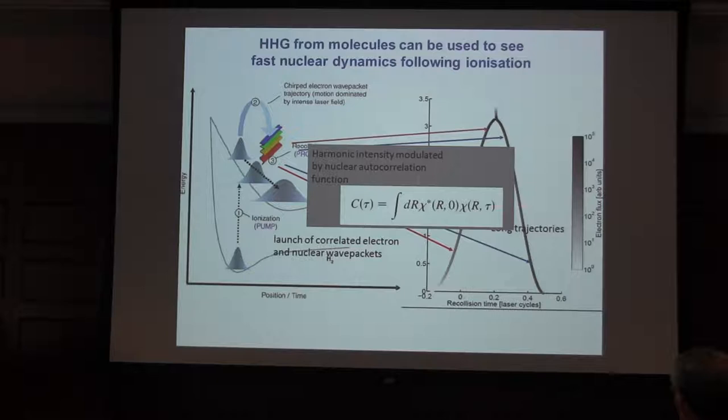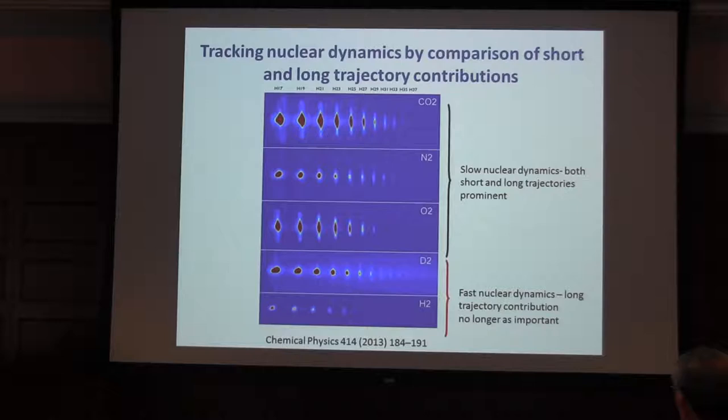Looking at these molecular HHG spectra where essentially the dominant effect is the nuclear correlation function changing in time. In other words, nuclei are moving in the time between ionization and recombination that reduces the harmonic signal according to the reduced overlap. One could potentially follow that by looking at short and long trajectories. In fact, we did that recently in the laboratory for a series of molecules, CO2, N2, H2.